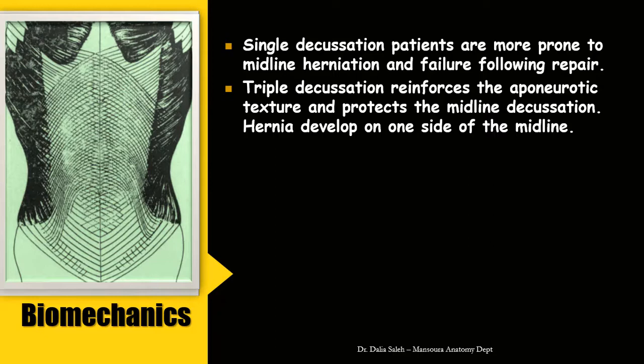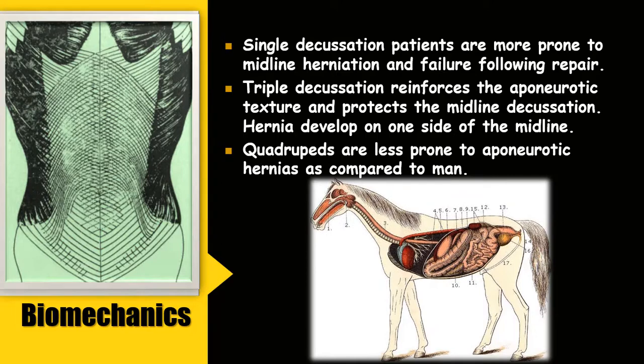If there is a hernia in the triple decussation region, it would be at one side of the midline, not in the midline. Compared to quadrupeds, humans are more prone to develop aponeurotic hernias, because in quadrupeds the linea alba is made of many lines of decussation to withstand the weight of the viscera that lies over the linea alba all the time.